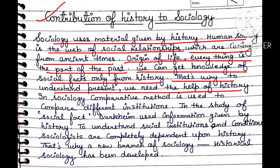The next heading is the contribution of history to sociology. Whatever material we study in history as subject matter, we can use in sociology. Human society is the web of social relationships, and social relationships have existed since ancient times. To understand the origin of life and how it has developed in societies, we get the answers from history. We can get knowledge of social facts only from history, so to understand present society we need the help of history.